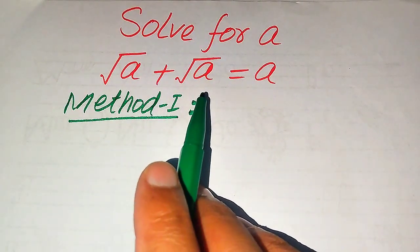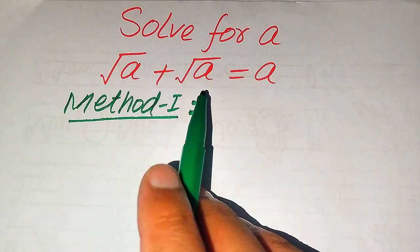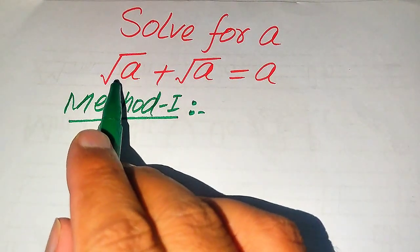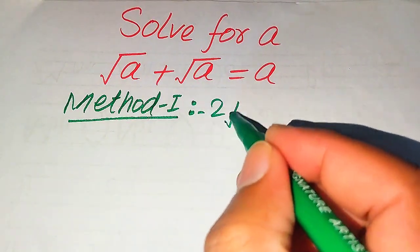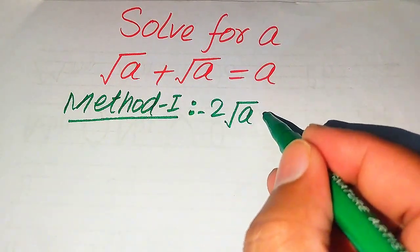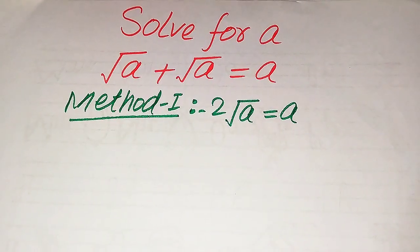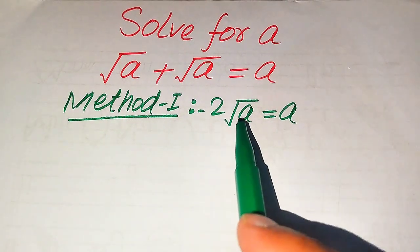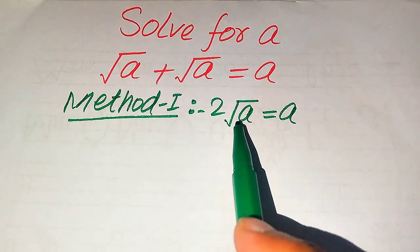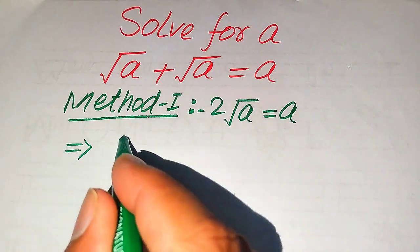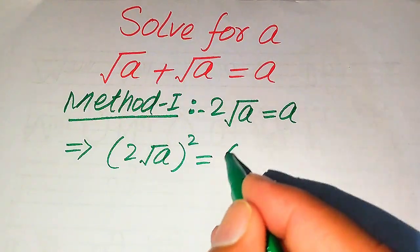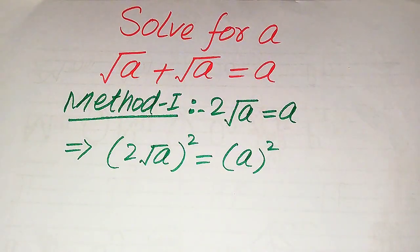In the first method, on the left hand side we have two same variable terms added together, so we need to add the coefficients of these two terms. Square root of a plus square root of a becomes two times square root of a, which equals a. To solve for a, we need to remove the square root sign from the left hand side, and to do that we take squaring on both sides.